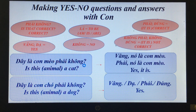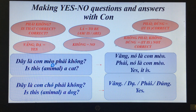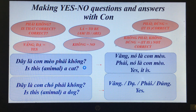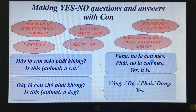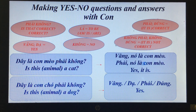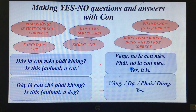'Đây là con mèo, phải không?' — Is this animal a cat? 'Vâng, nó là con mèo.' / 'Phải, nó là con mèo.' — Yes, it is a cat.